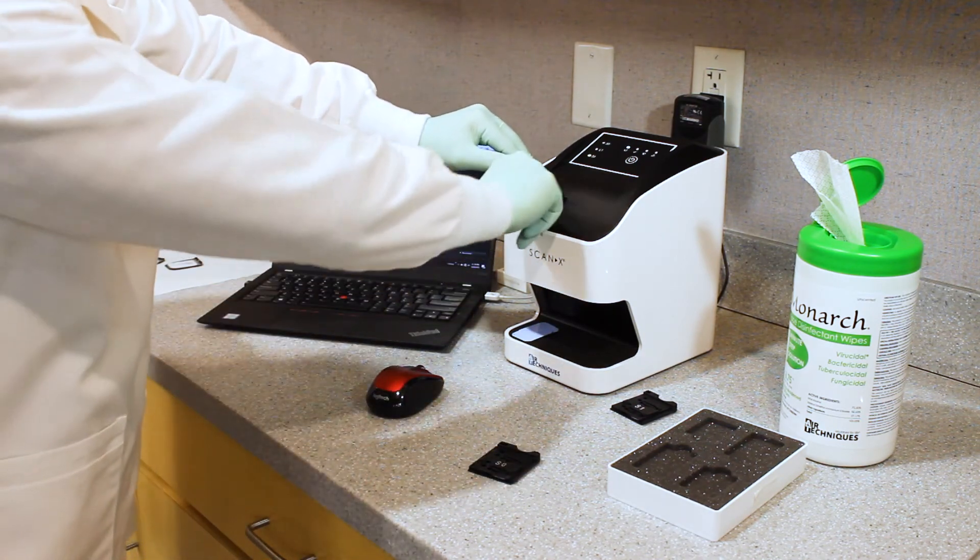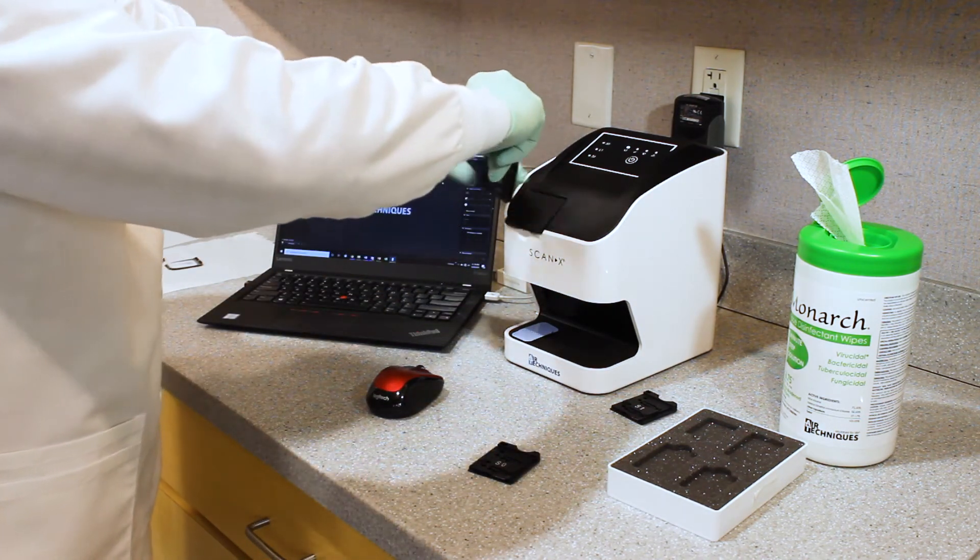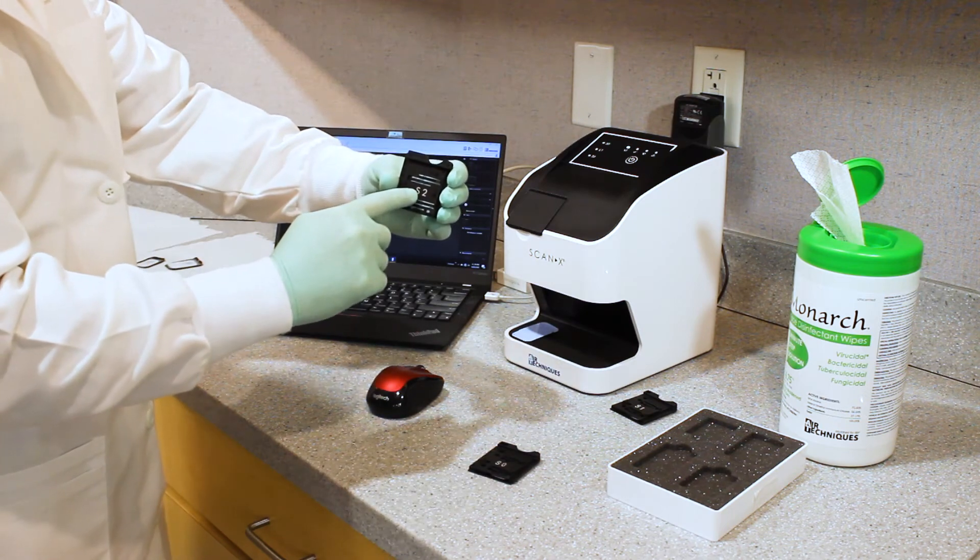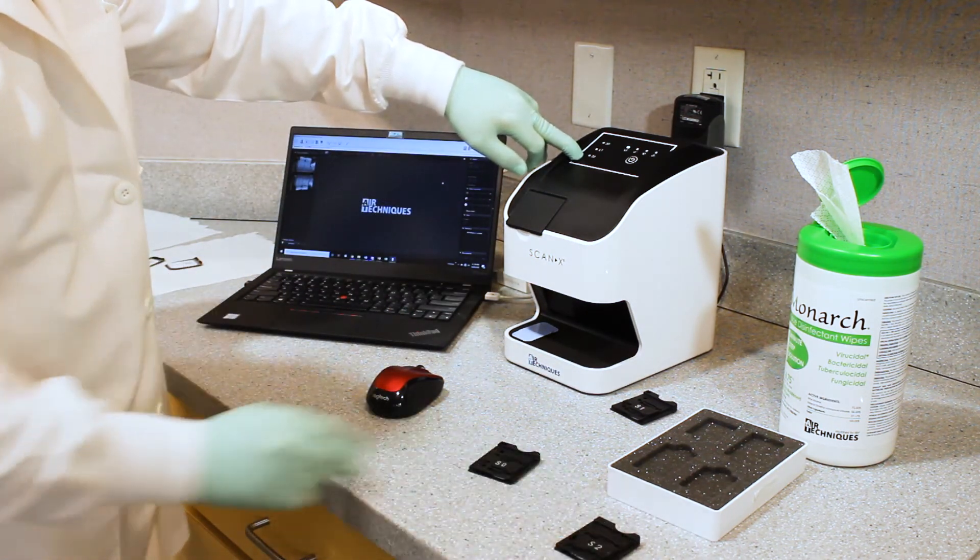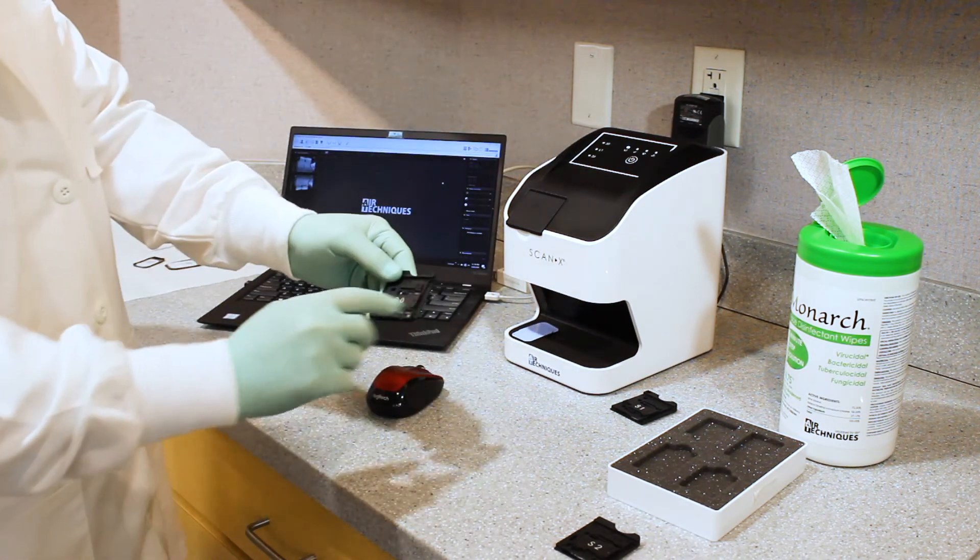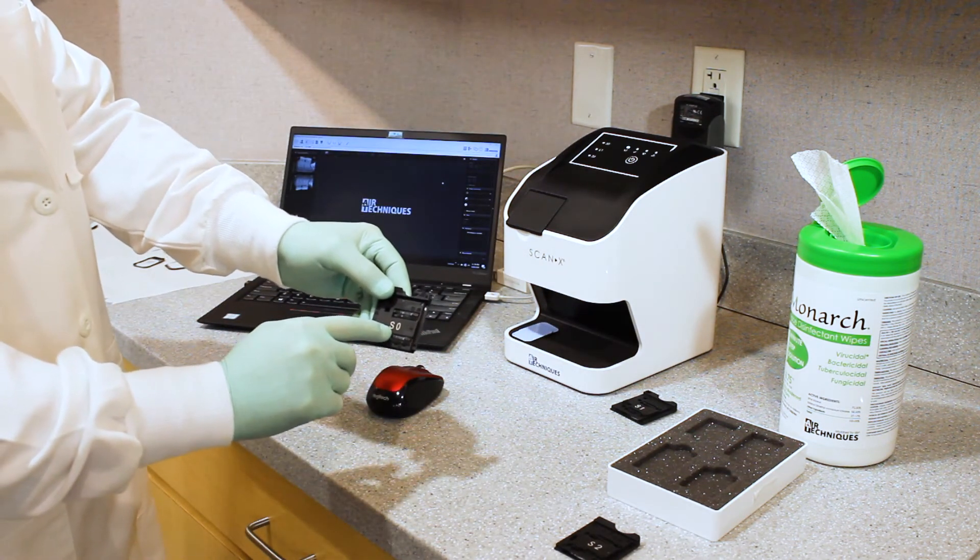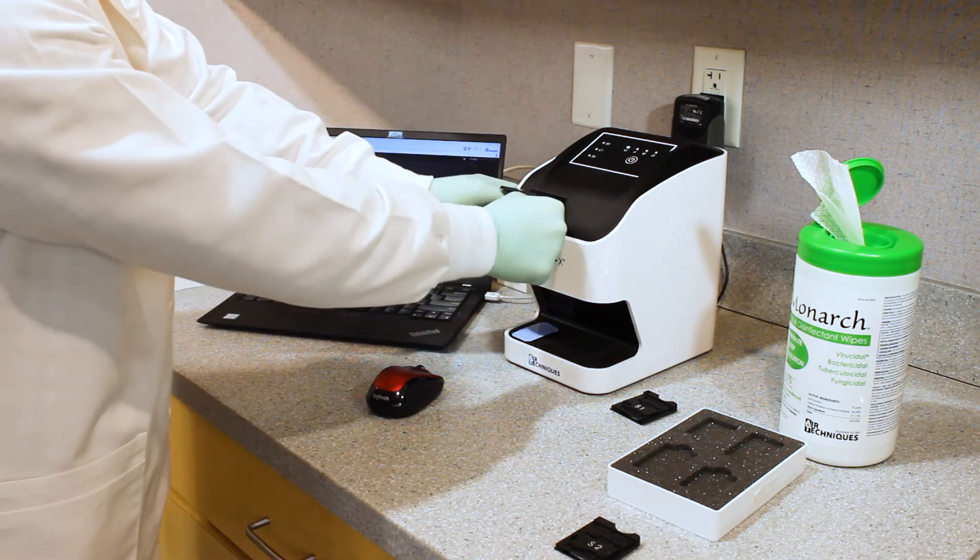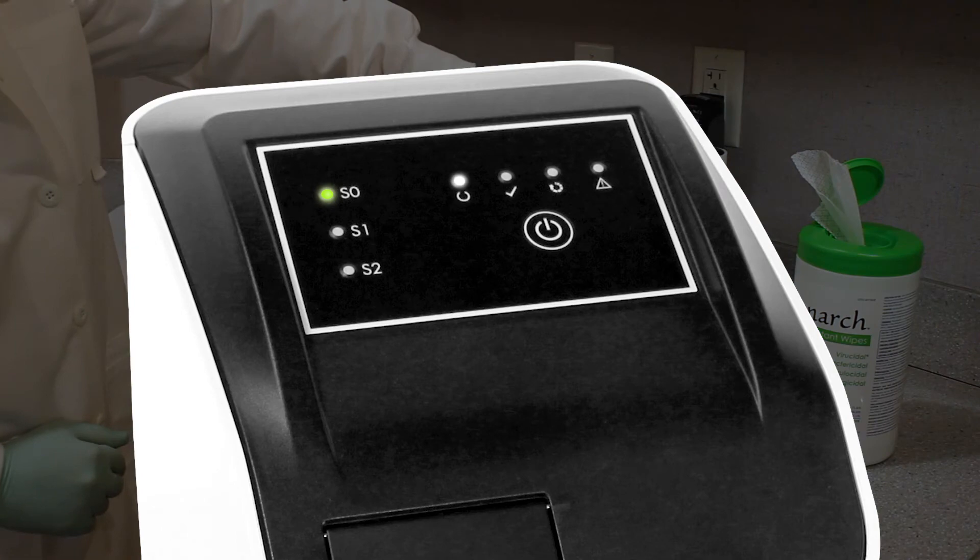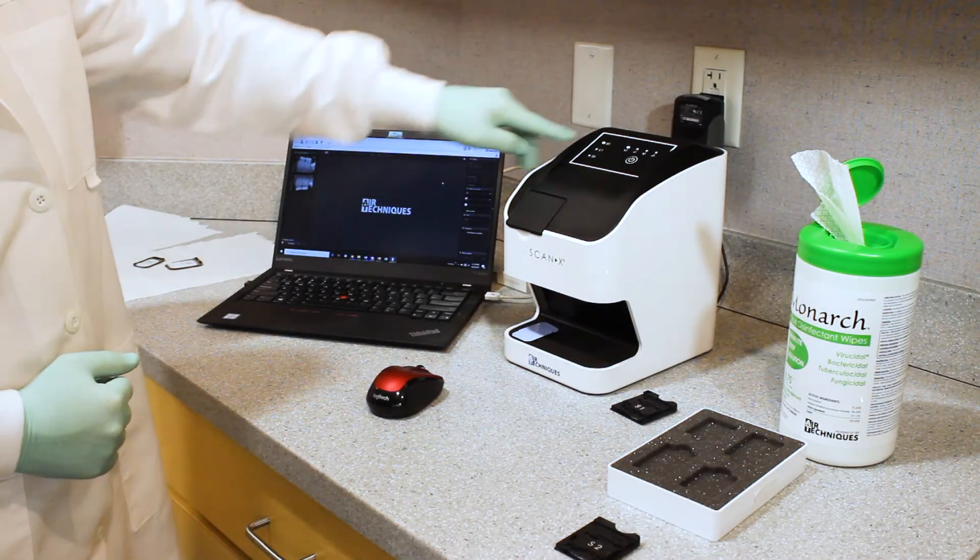So for this, I'm going to take the size number two cartridge out. And you'll notice the LED on the S2 is now turned off. And we will take the size zero or S0 and insert that into the scanner. And in doing so, it now indicates and it knows that a size zero cartridge has been inserted into the machine.